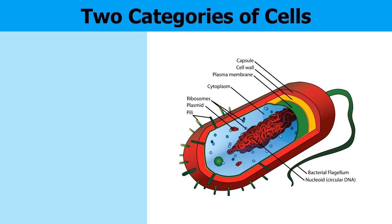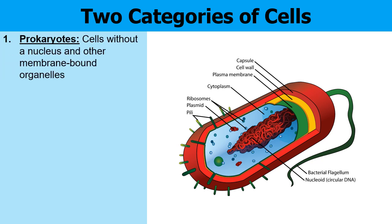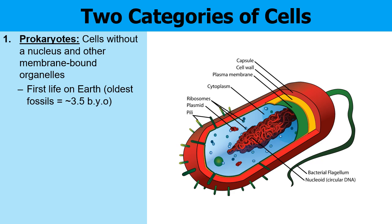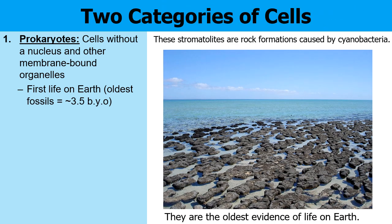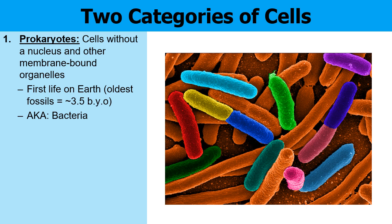Let's talk about the two categories of cells. The first category is prokaryotes — these are the cells that lack a nucleus and other membrane-bound organelles. They don't have a nucleus, mitochondria, chloroplasts, or lysosomes. These are very primitive, very ancient organisms — actually the oldest organisms that science has ever identified on Earth. Their fossils go back about three and a half billion years ago. These rock formations known as stromatolites were created through the actions of these ancient prokaryotes. You probably know these as bacteria — microscopic bacteria are prokaryotic organisms.